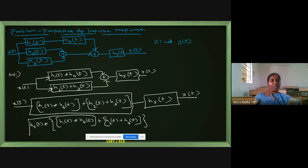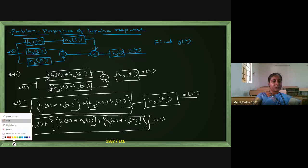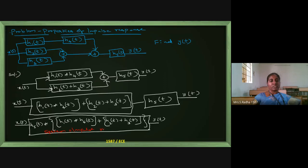I am converting two blocks to a single block. Overall output is Y of T, overall input is X of T. Now for the final output Y of T: in any block, output is convolution of input and impulse response. This complete block is the system — its impulse response and system characteristics. Output is nothing but convolution of input and impulse response.